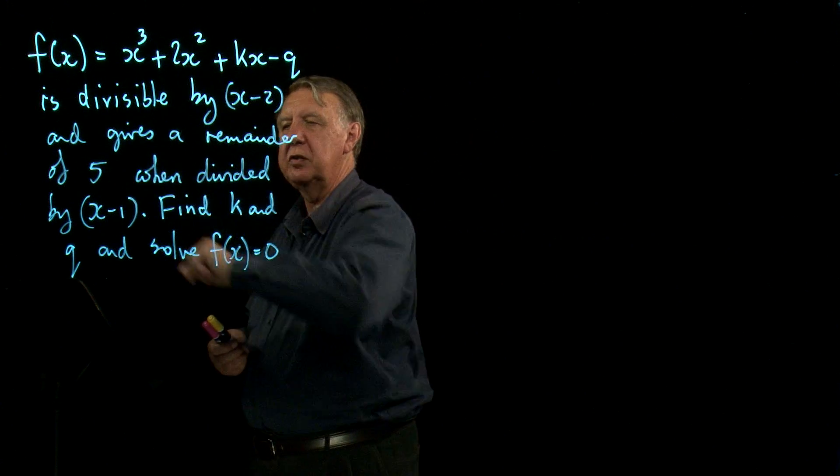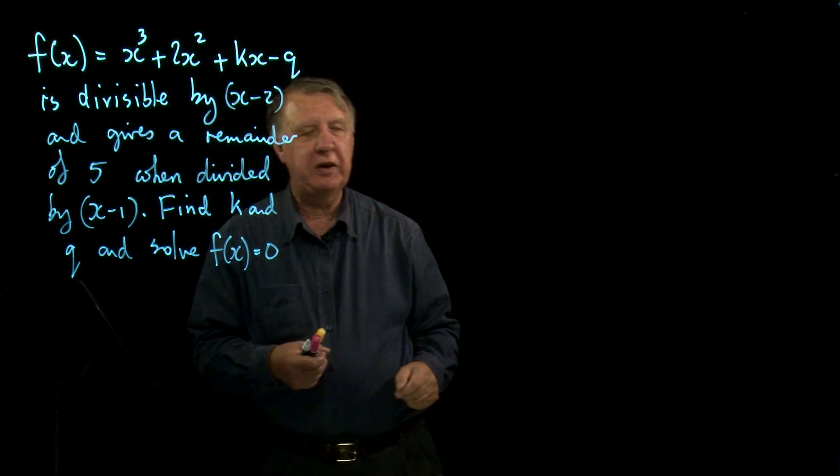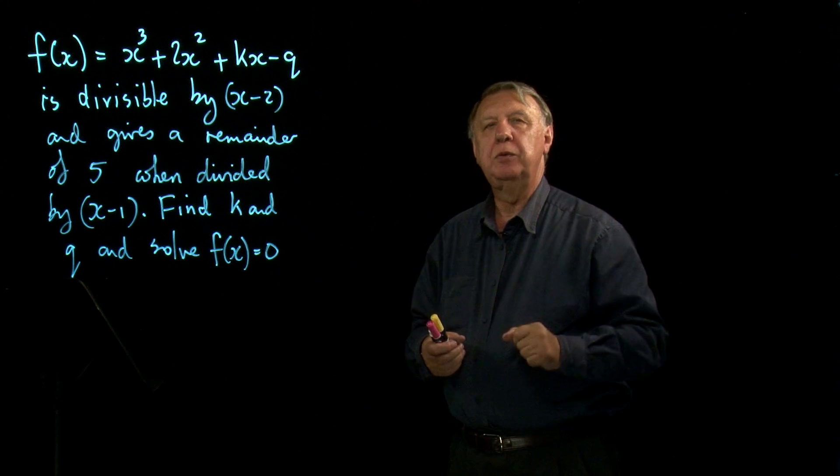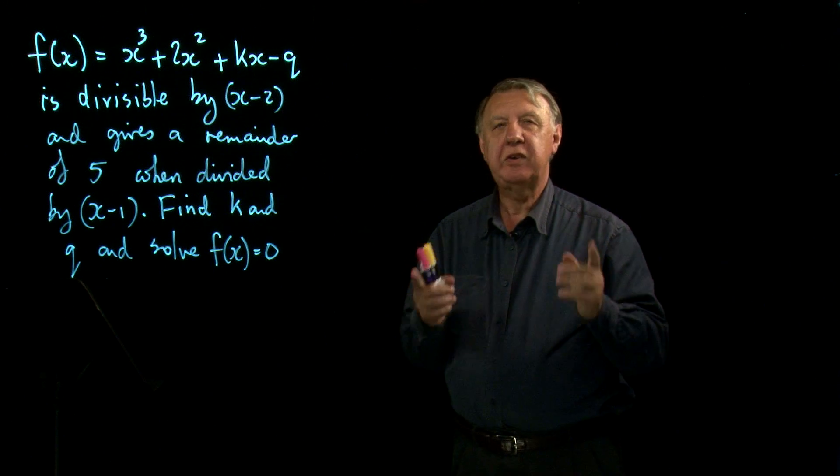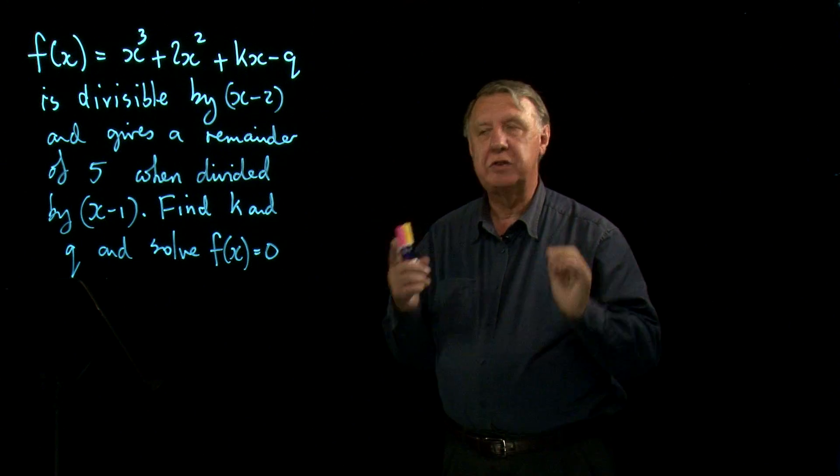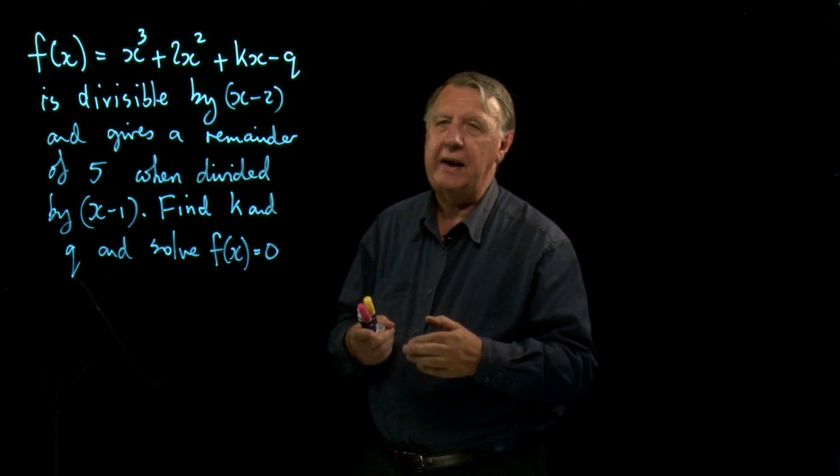We know there's a remainder of five when divided by x minus one. So whatever you do, don't start that long division process. You only do that long division process in the exam if you're actually asked to do it. You can always get around it.